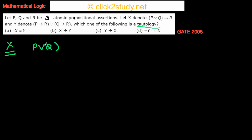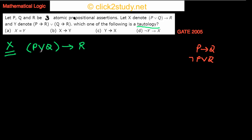X is 'P or Q implies R.' We'll try to rearrange this into a similar form as Y. The first thing we do — as we do so many times — is apply the identity: P implies Q is equivalent to not P or Q. So X becomes: not P or Q, or R.